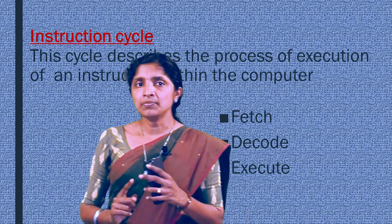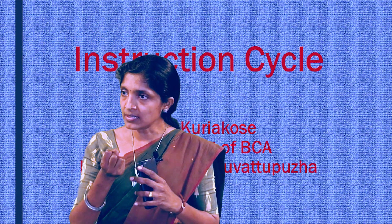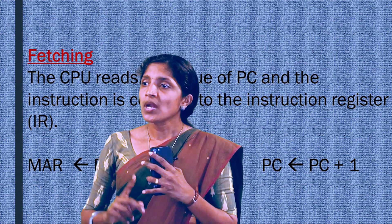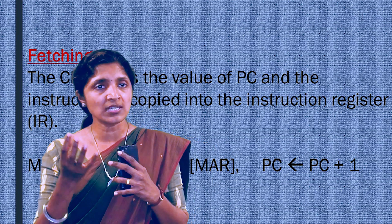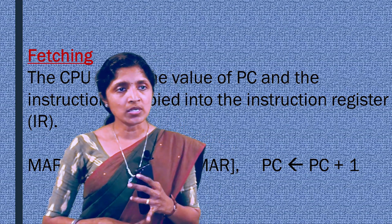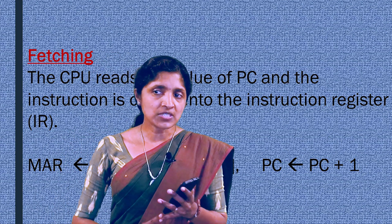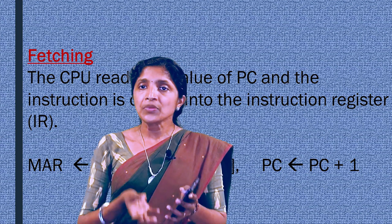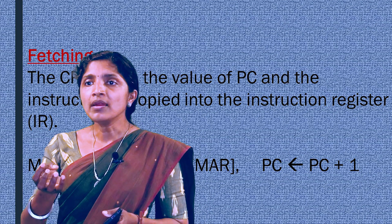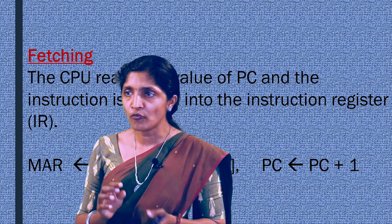Now let's see the first step, that is fetching. We know that the instruction is already stored in the memory. That instruction should be accessed into the CPU — that is done in the fetching process. So fetching involves accessing the instruction stored in memory. The fetching process involves three operations. The first is that the information stored in the program counter is transferred into the memory address register, since the program counter contains the address of the next instruction. From that particular address, we fetch the current instruction and it is then transferred to the instruction register.